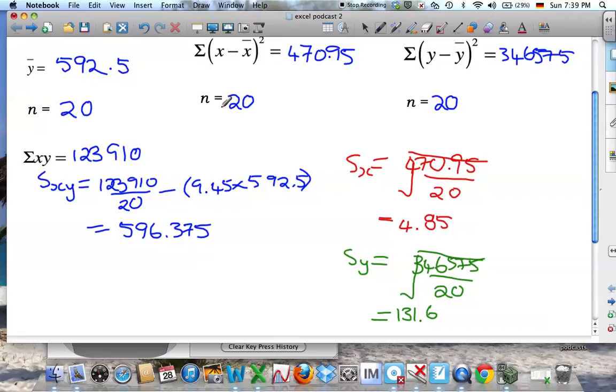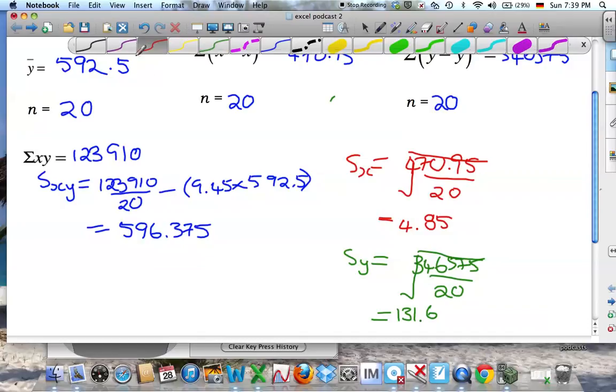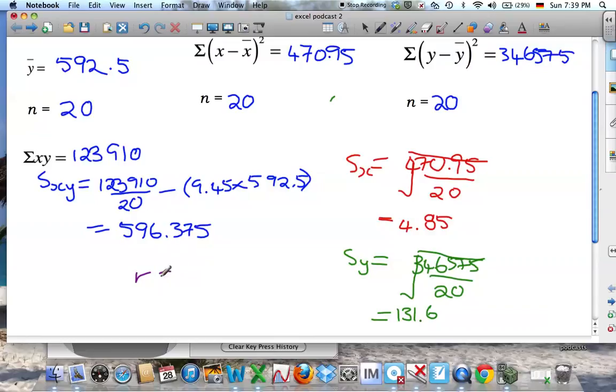And now we just need to put it all together. So if I get one more color, I can say that r is, it was this answer, 596.375.